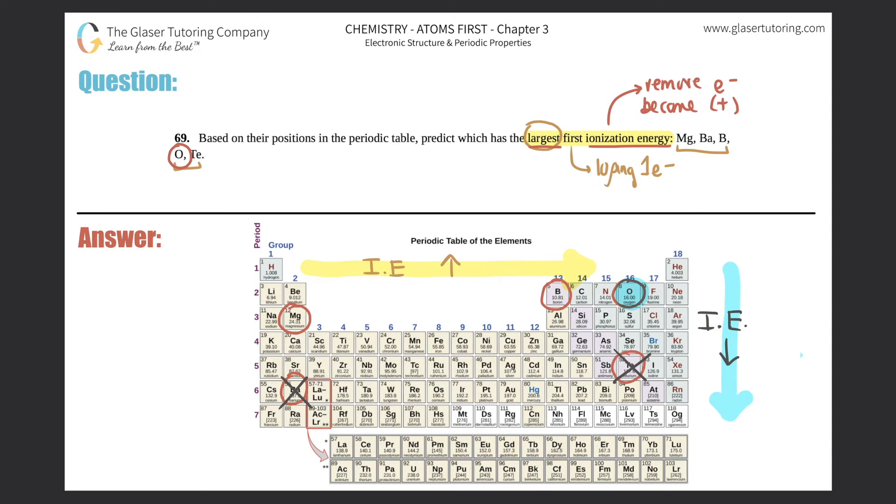So it's as simple as that. Just memorize this trend. So this is the second trend we learned. We learned atomic radius in the last two questions, now this is ionization energy. Memorize these trends for your test and quizzes. They love to ask these questions, so it's good to memorize this information.